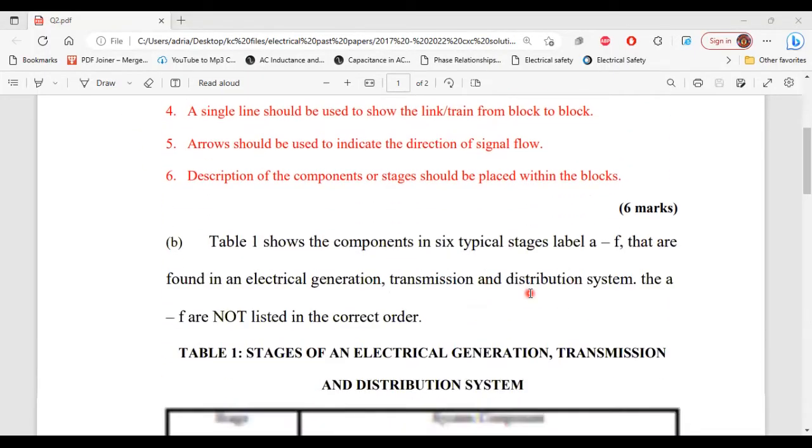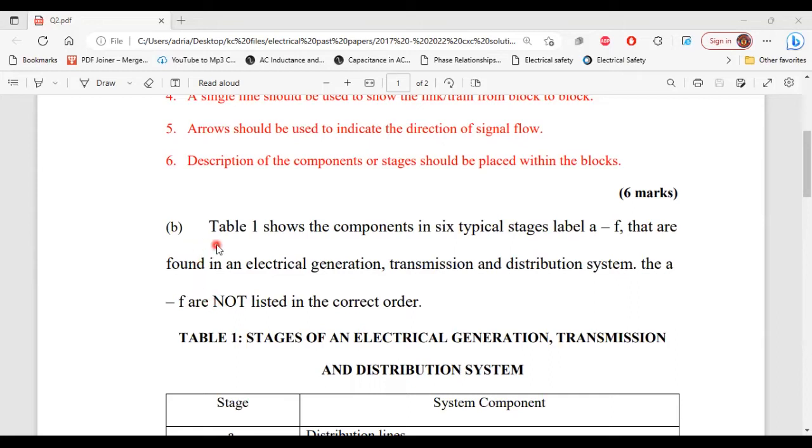All right, let's move on to part B. It says, table one shows the components in six typical stages labeled A to F that are found in an electrical generation, transmission, and distribution system. A to F are not listed in the correct order.